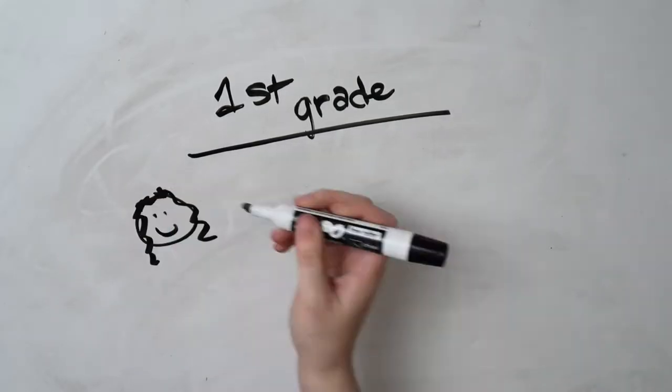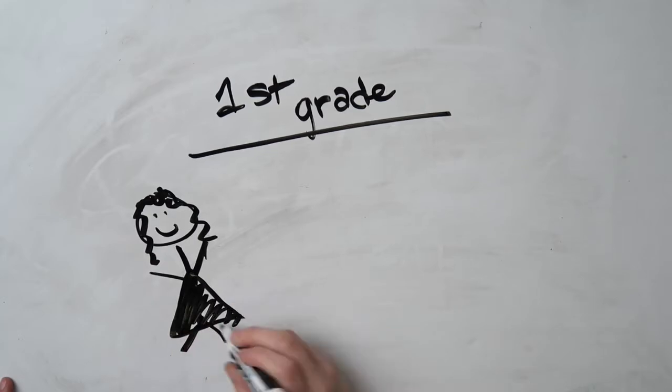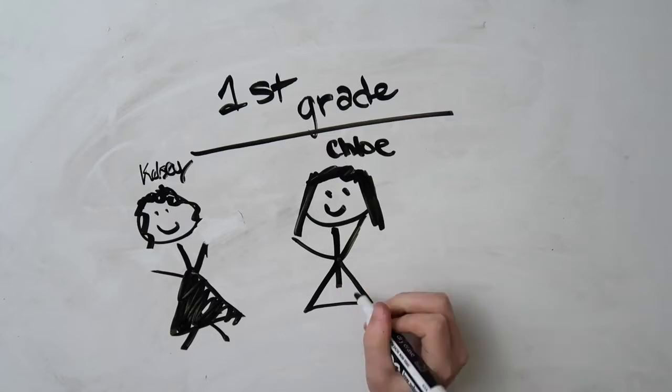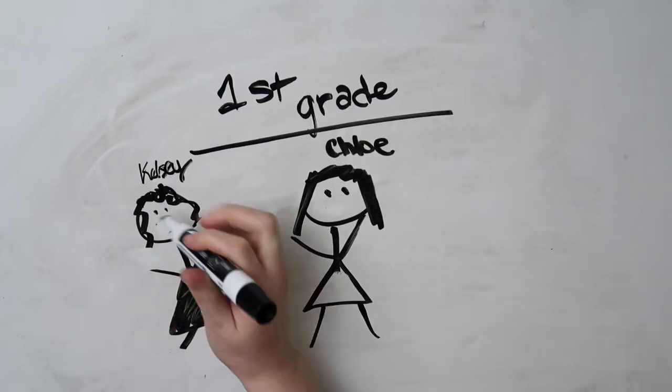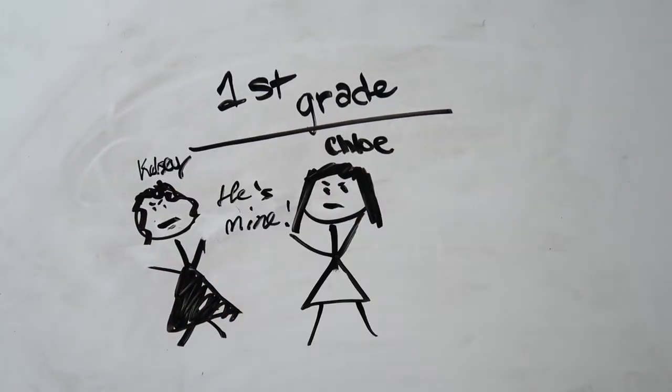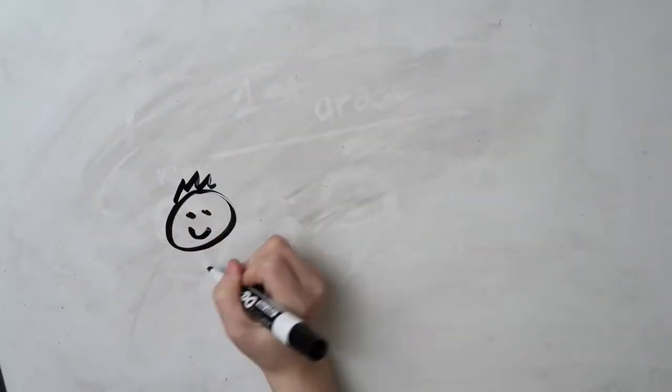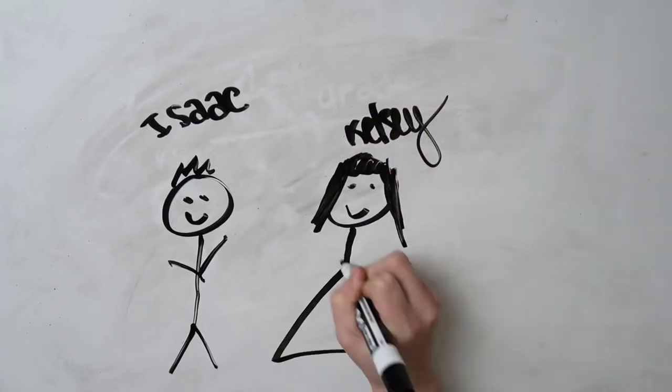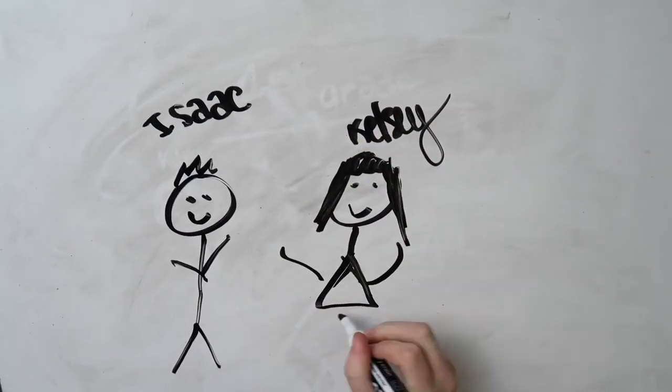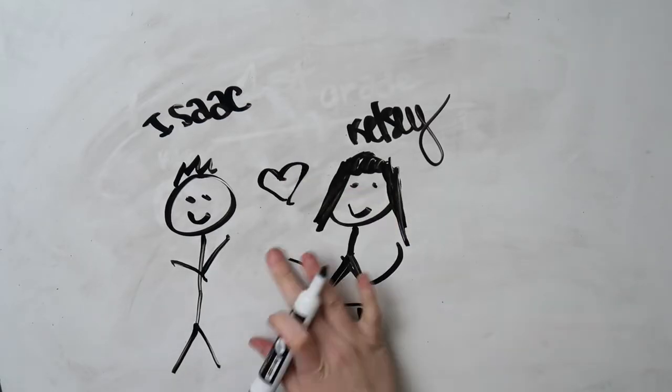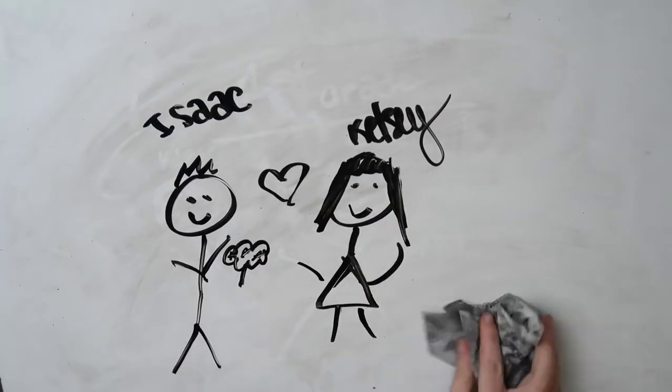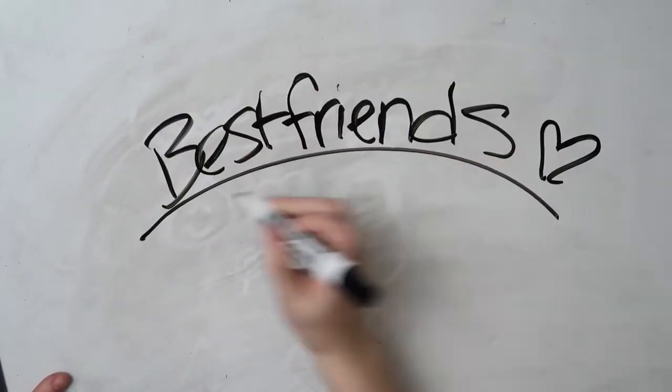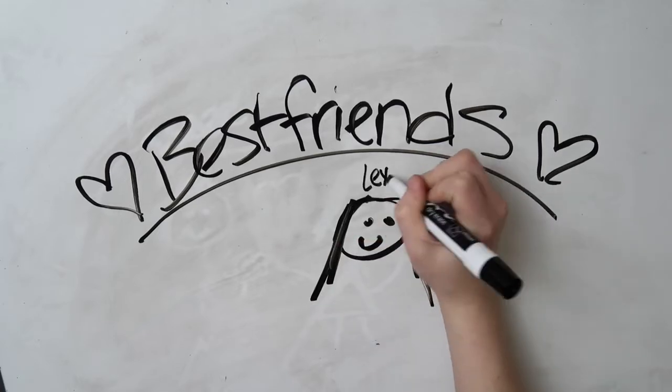In first grade I met my best friend Chloe. We had a fight over a guy named Isaac because she wanted him and I also wanted him. I won. I remember he came up to me on Valentine's Day, shoved chocolates and I think a little flower thing in my face and ran away. It was honestly cute. But then in third grade I met my best friend Lexi. After that whole boyfriend fight, Chloe and I weren't really friends anymore. Lexi happened to be Isaac's cousin.